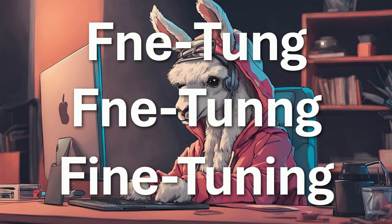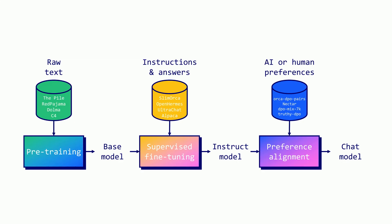We saw a bit of fine-tuning in the previous session, so I'll try not to repeat too much, but basically here's the LLM training lifecycle. You see three stages — first you have the pre-training stage where you give a lot of raw text to the model, and the idea is that the model learns to do next token prediction. The result of that is called a base model.